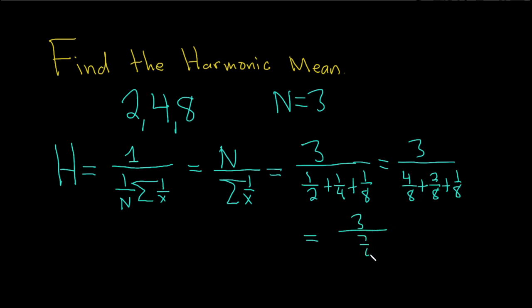this will be 7 eighths. So 3 divided by 7 eighths is 3 times 8 sevenths, so this is 24 over 7, which at this point, I guess, I will reach for a calculator. And we have 3.43 or so, so roughly 3.43.